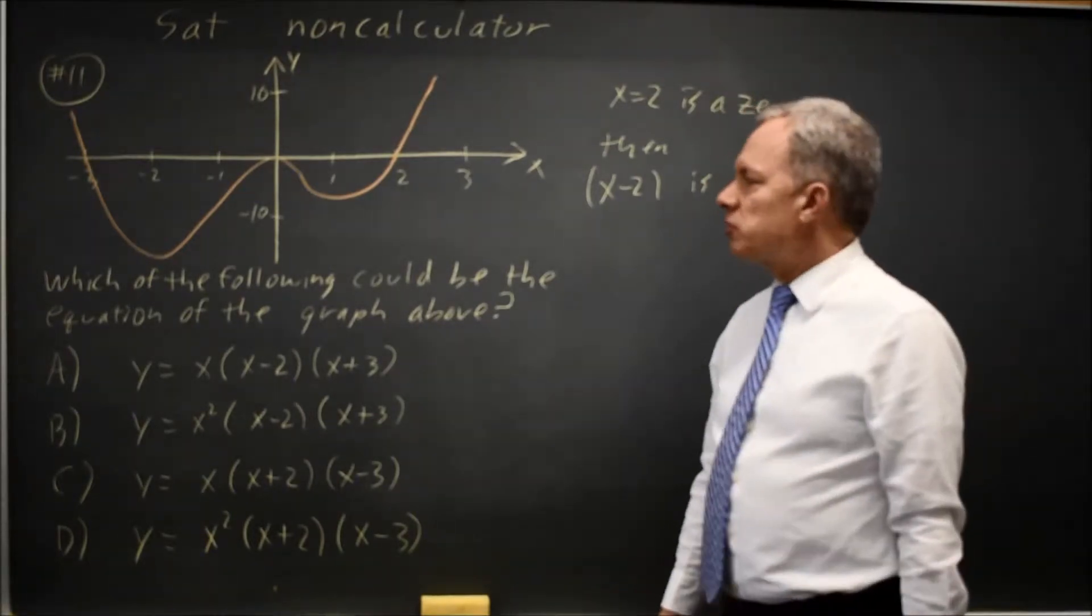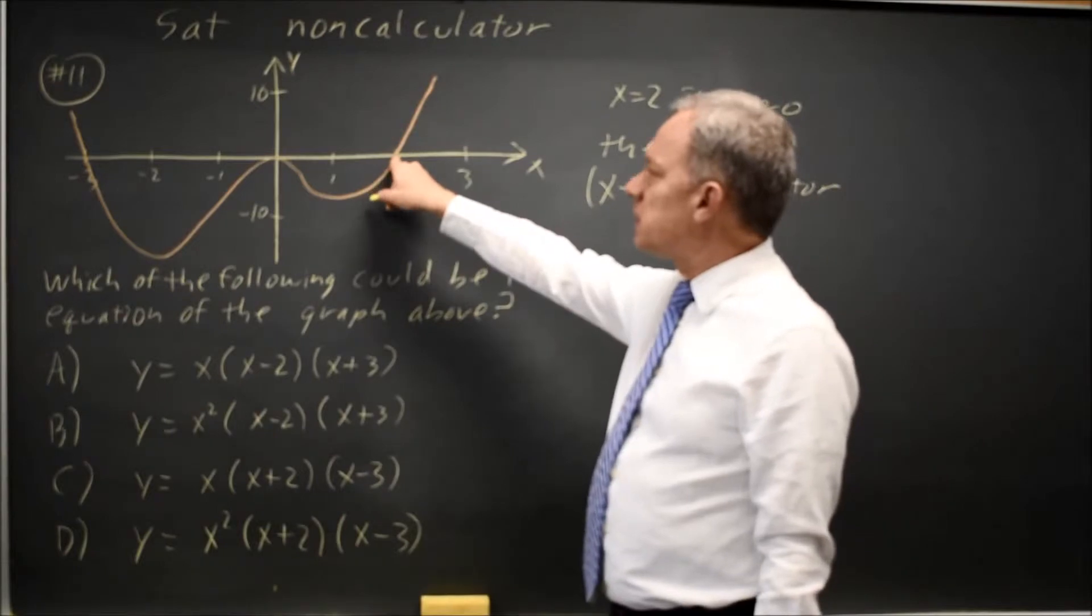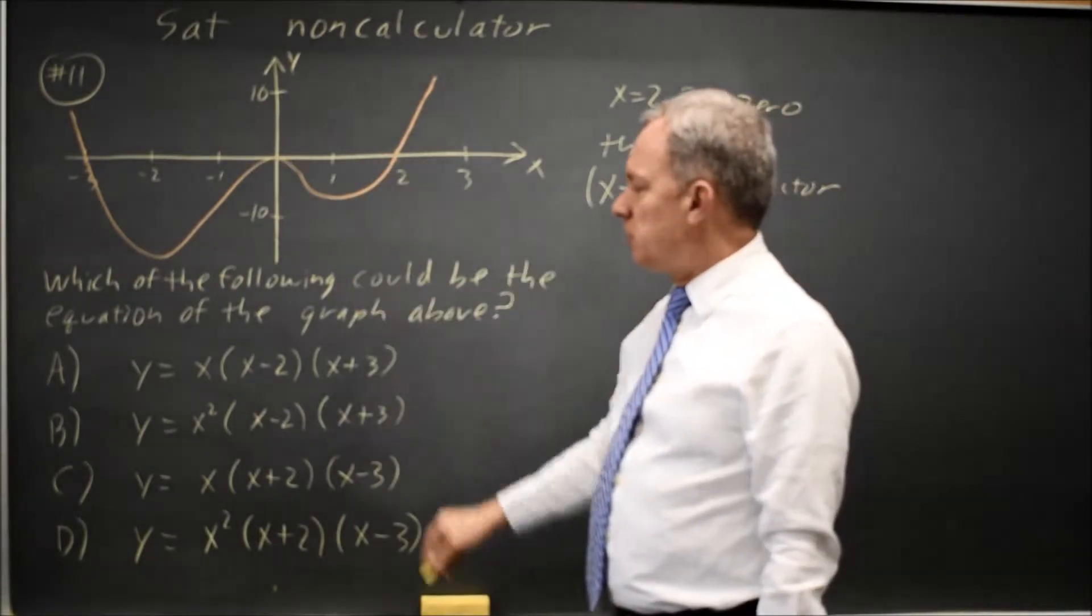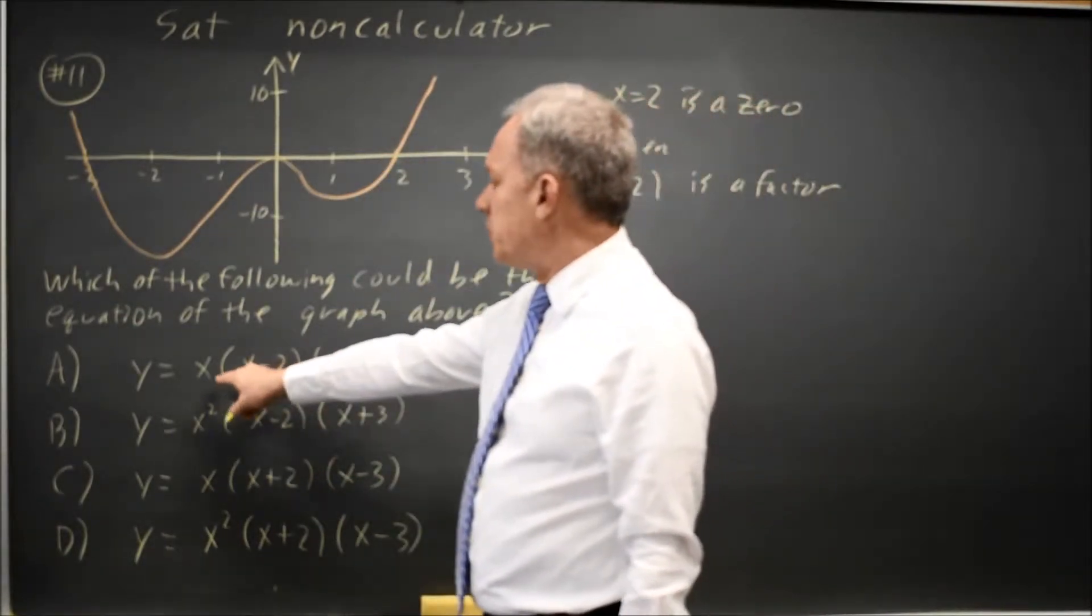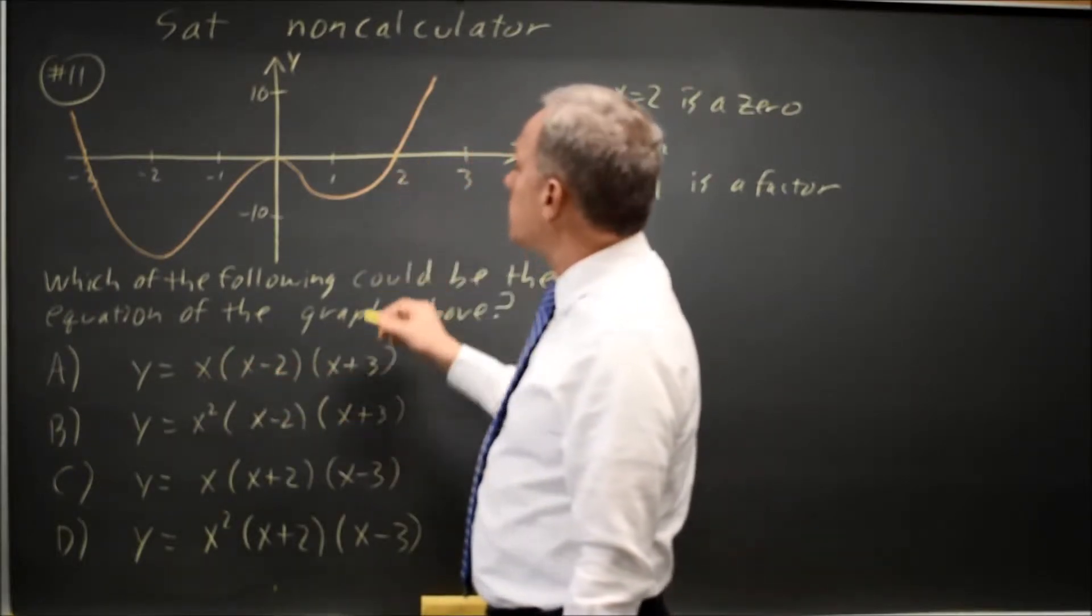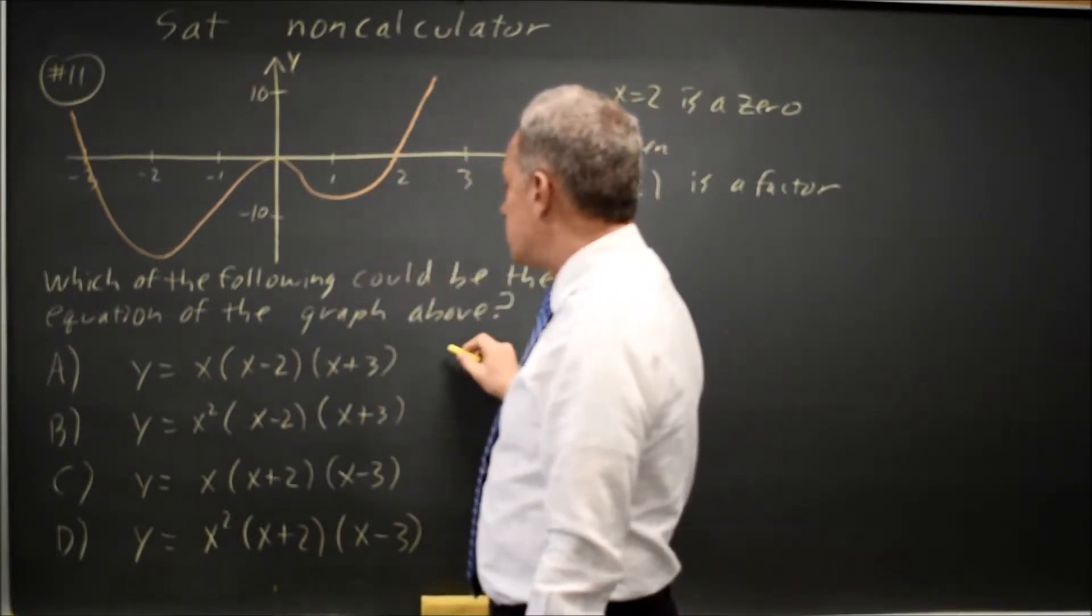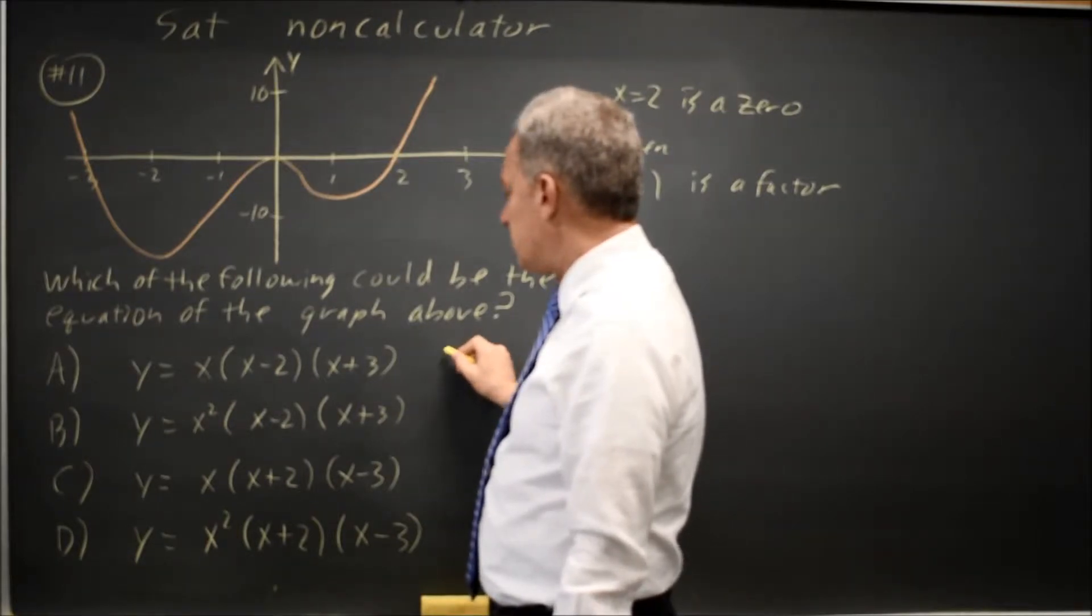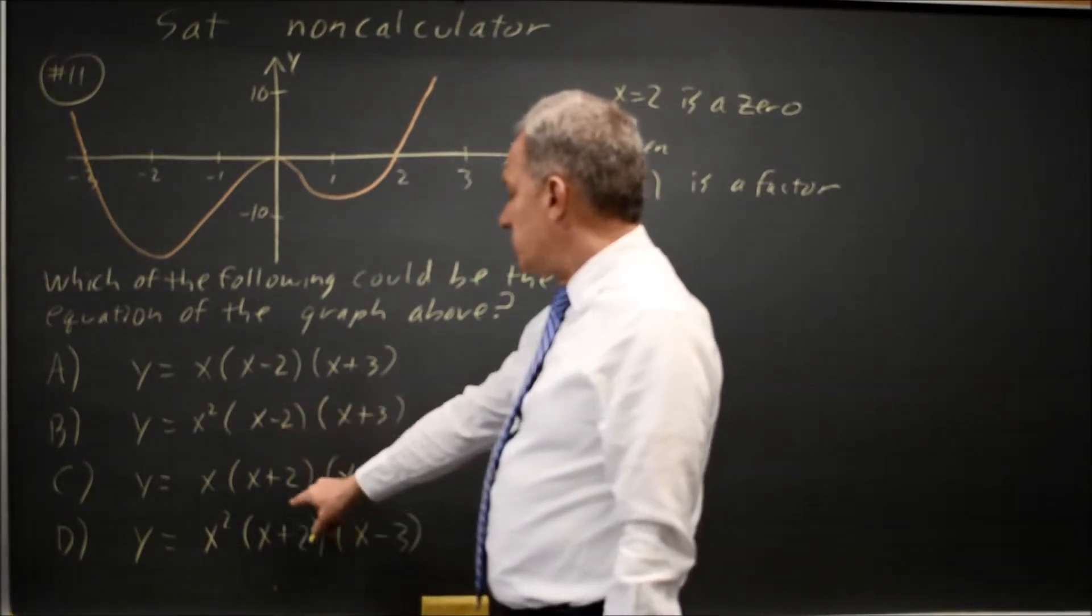If we're unsure of that, notice that at x equals 2 the graph is 0. If I substitute in 2 here, I get 2 times 0 times 5, which is 0, and the y value is supposed to be 0. So this could be good, because again, I get 0.